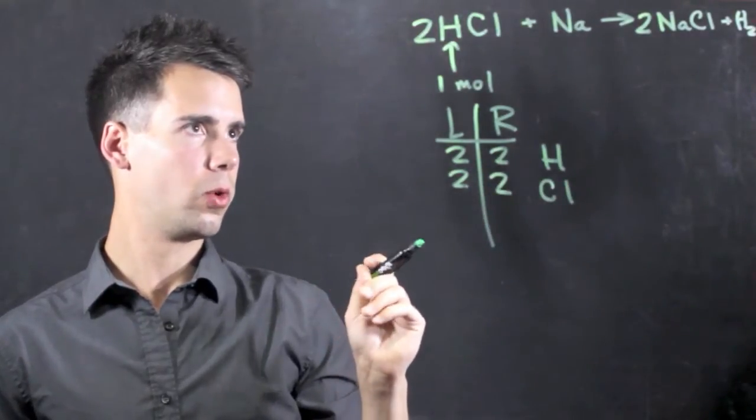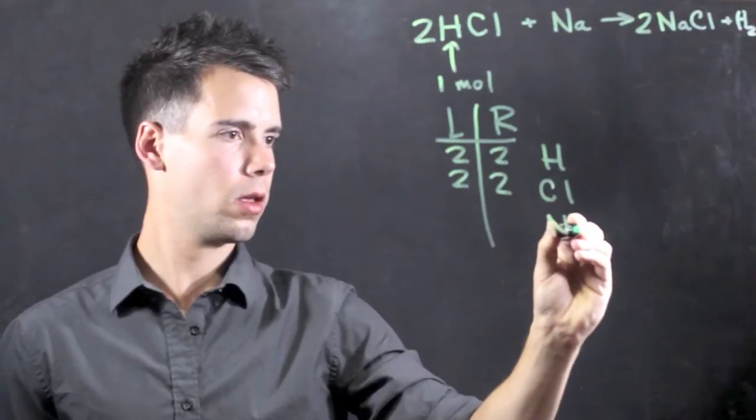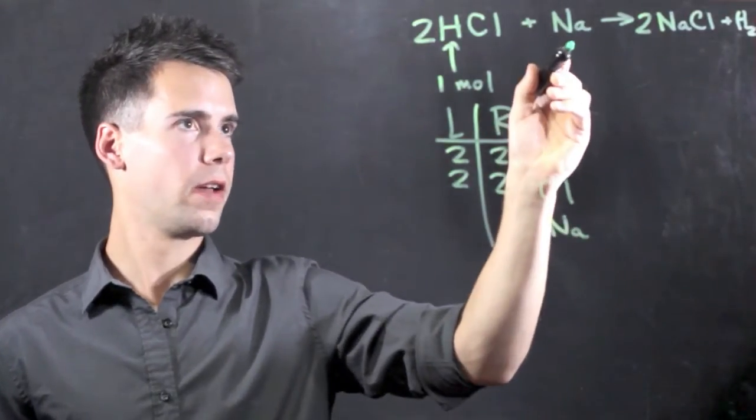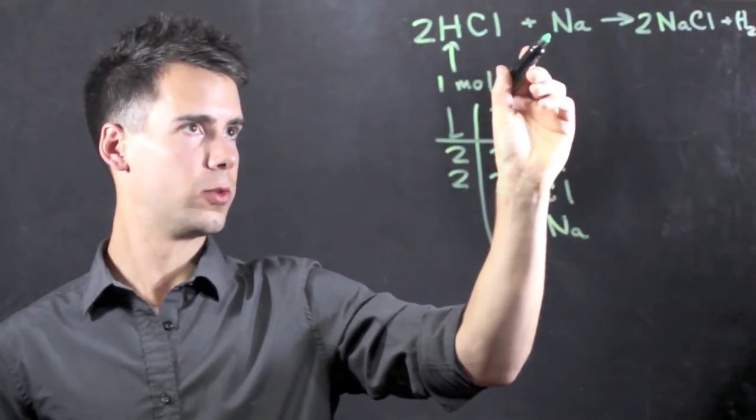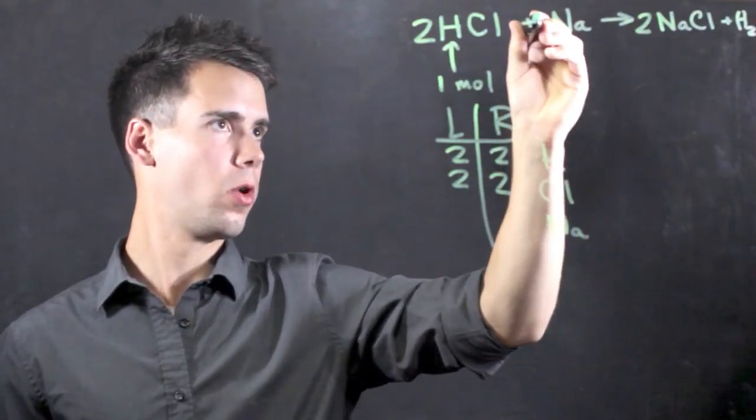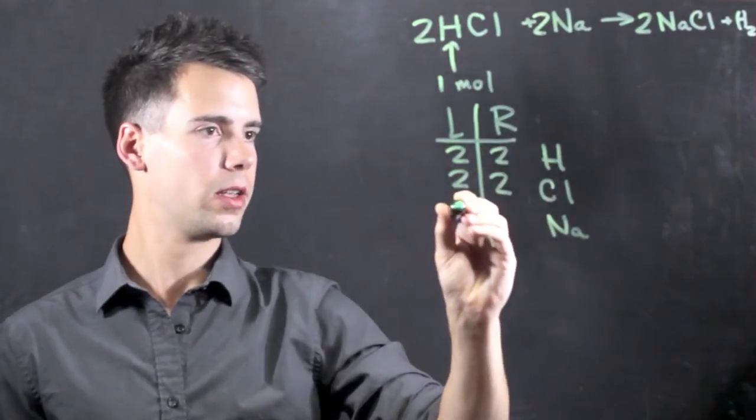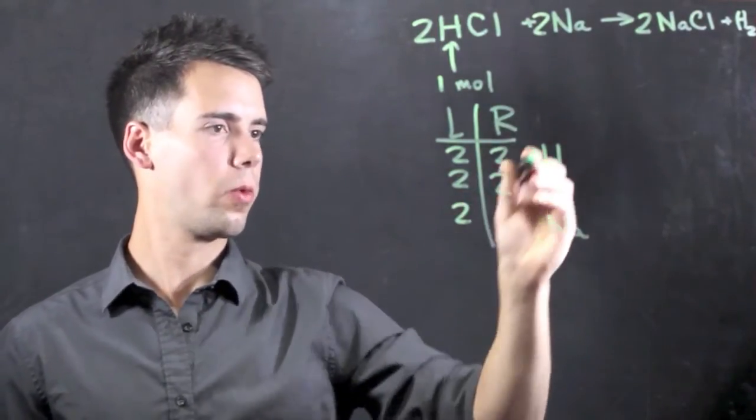Now, the last one to look at is sodium. On the left-hand side it only has one, and on the right-hand side it has two. So if we multiply this sodium by two, we find that two sodiums are on the left-hand side and two are on the right-hand side.